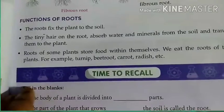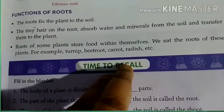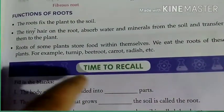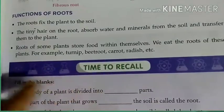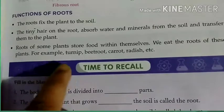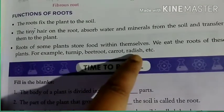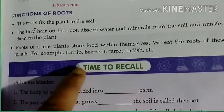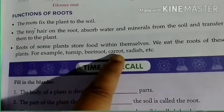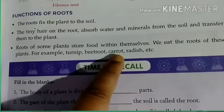Roots of some plants store food within them. Some plants have roots that we eat as food. For example: turnip, beetroot, carrot, radish. These are roots that we eat. For instance, in carrot — which portion do we eat? We eat the root portion.